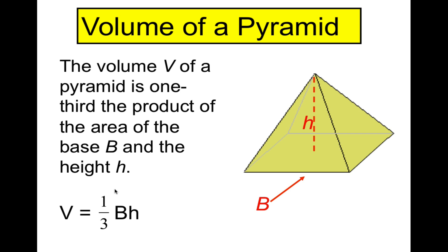Let's take pyramids first. To find the volume of a pyramid, the volume V equals one-third times the product of the area of the base and the height — V = (1/3) × B × H — where capital B stands for the area of the base and H is the height of the pyramid.